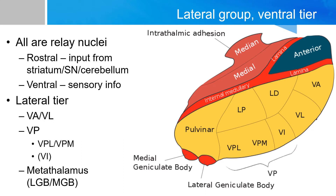The remaining nuclei in the lateral group belong to the ventral tier, also called the lateral tier. These are all relay nuclei. Rostrally, the VA and VL are typically grouped together and receive information from the motor side of the system — the striatum, substantia nigra, and cerebellum. The ventral posterior (VP) is further divided into VPL and VPM, with the medial receiving head and neck sensation and the lateral receiving sensory information from the rest of the body.